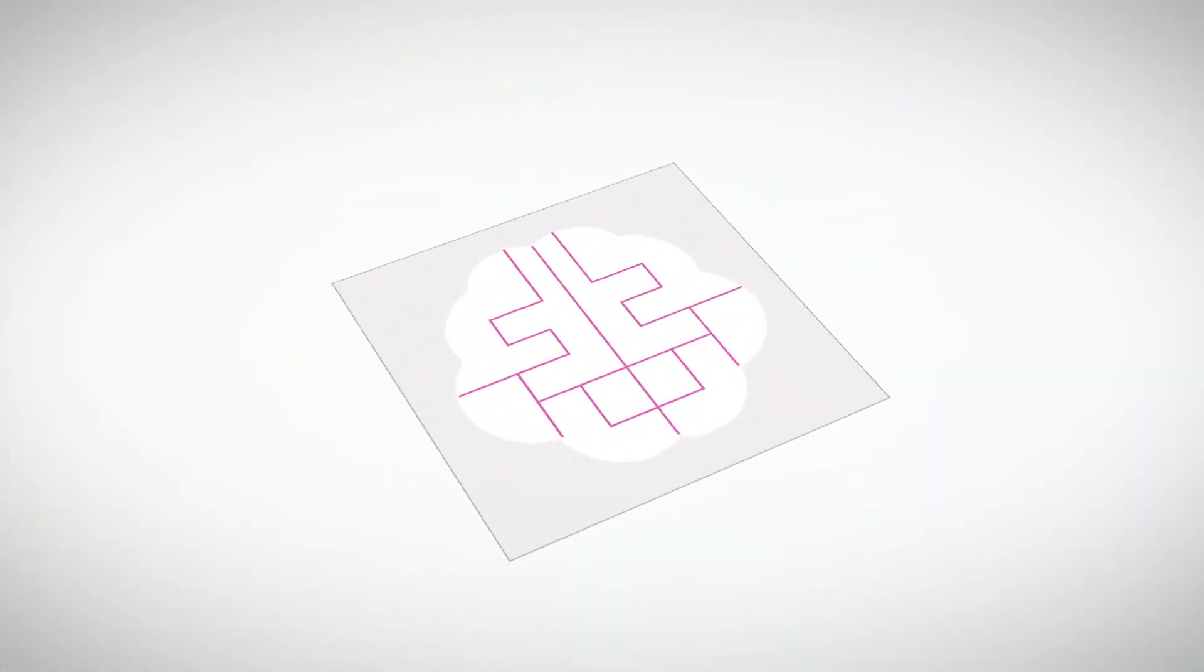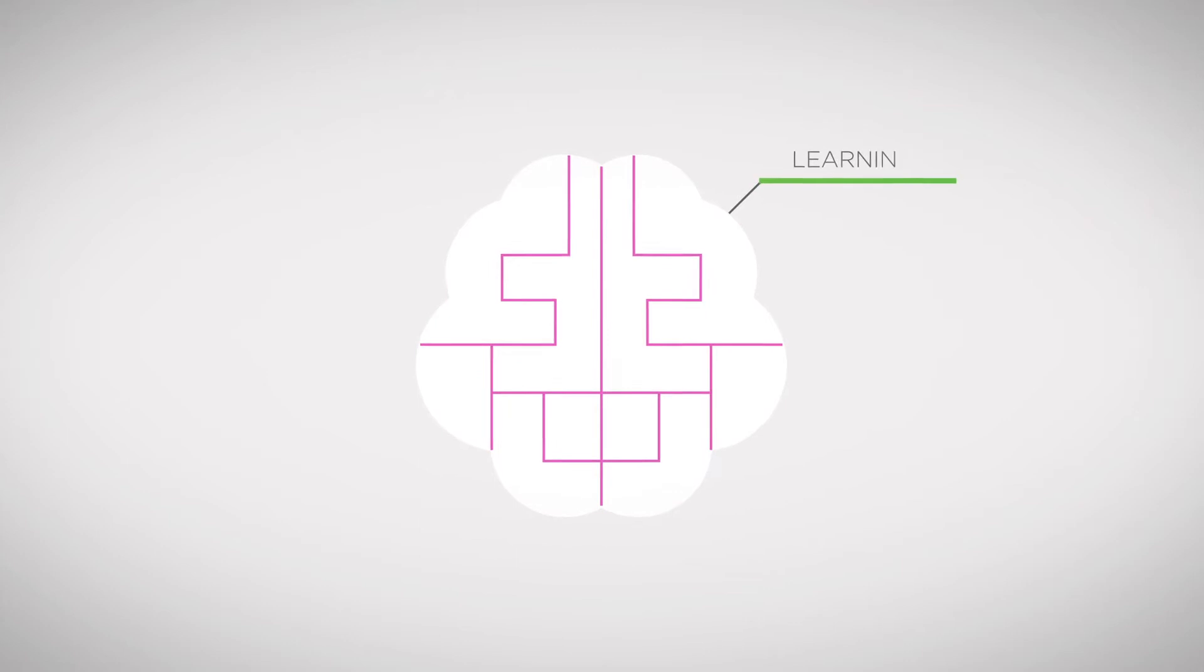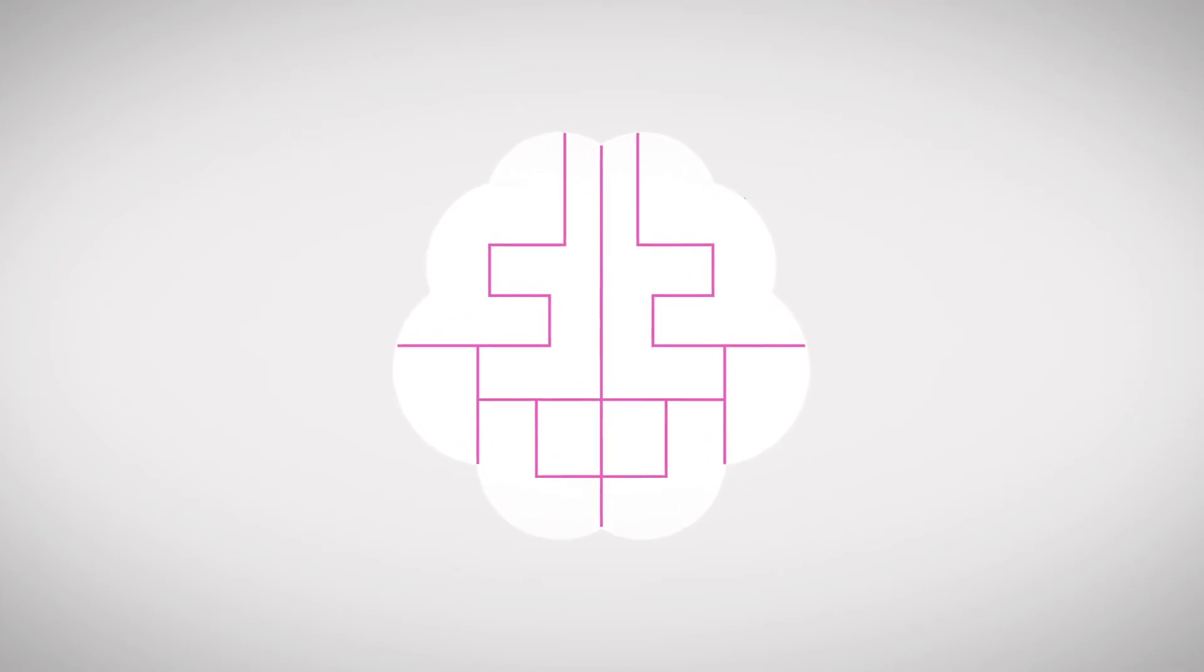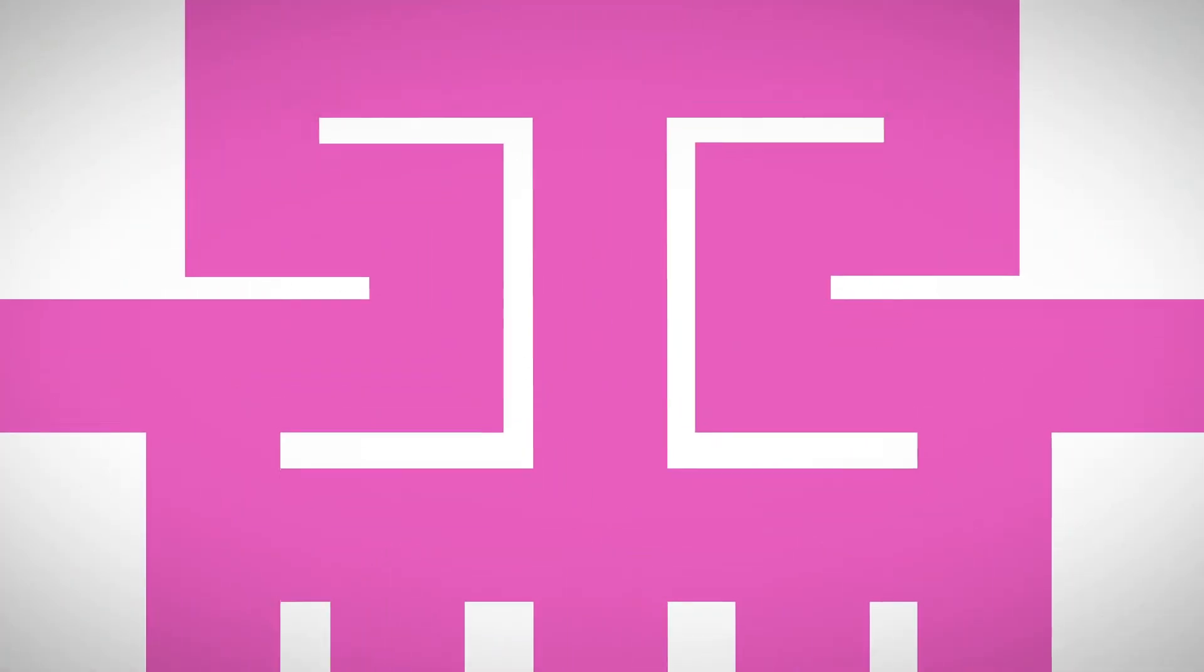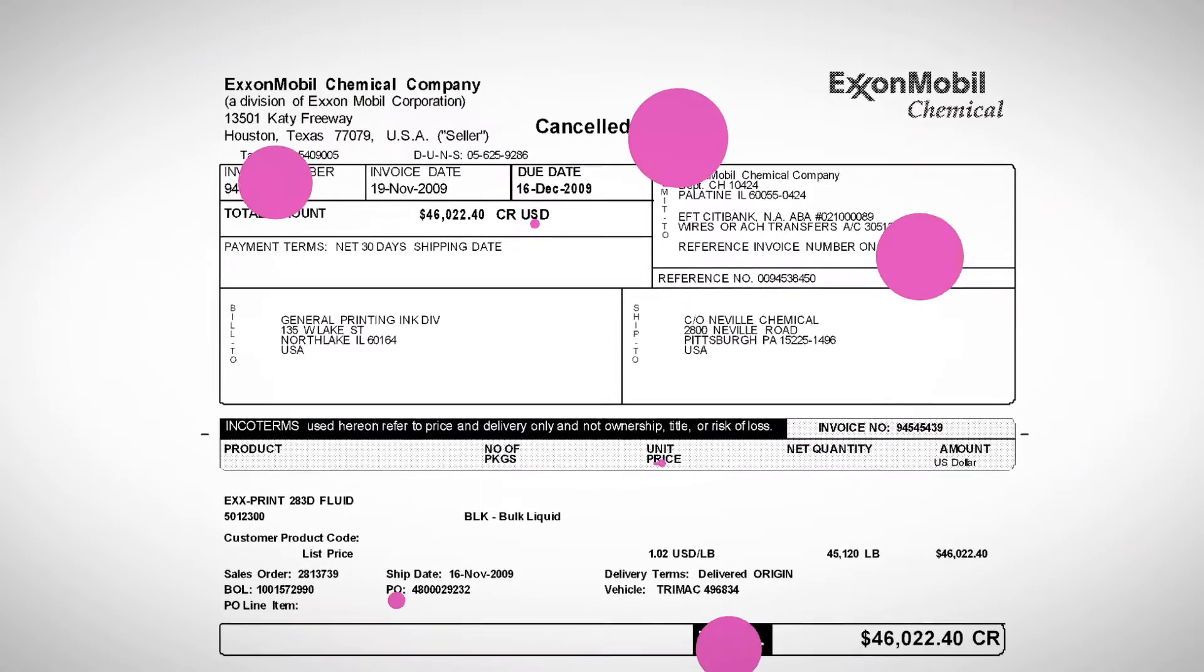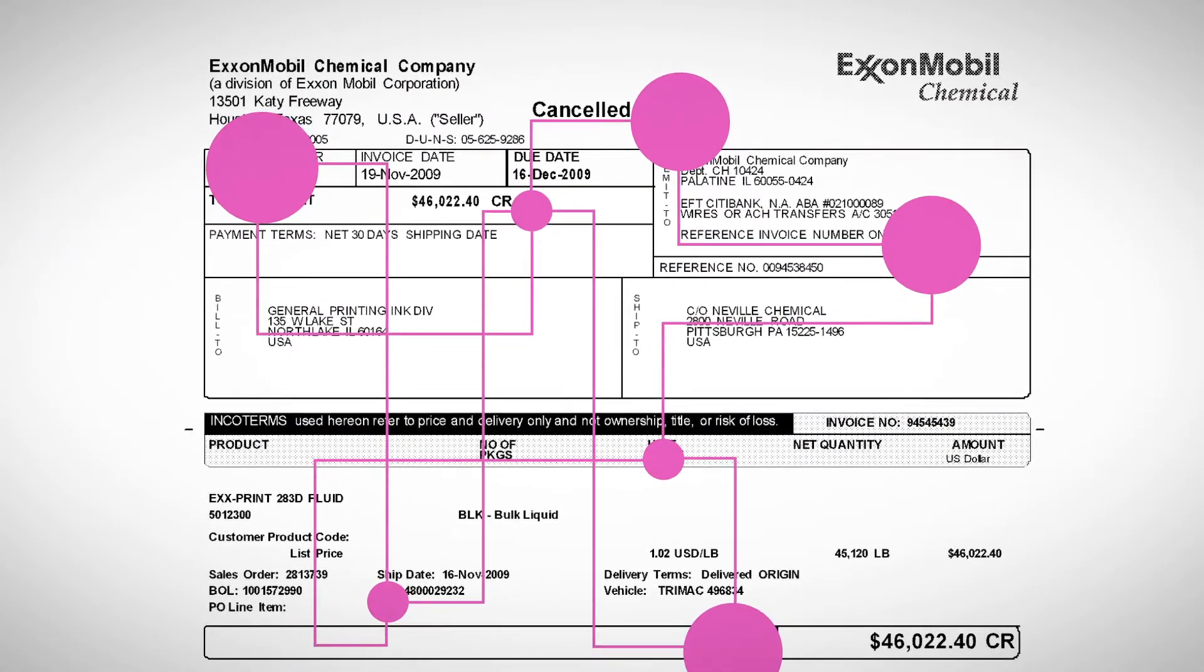The second layer of Brainware's intelligence is learning. Brainware recognizes information patterns on a page and relationships between words to classify documents and identify fields for data extraction.